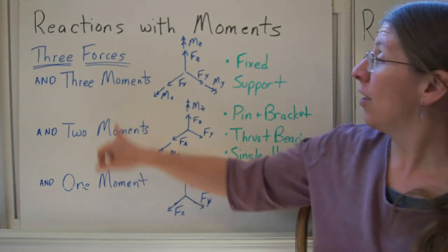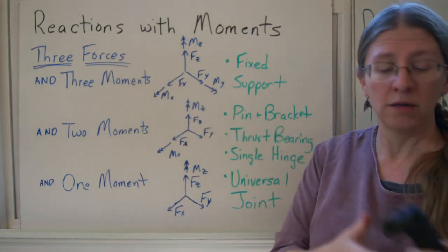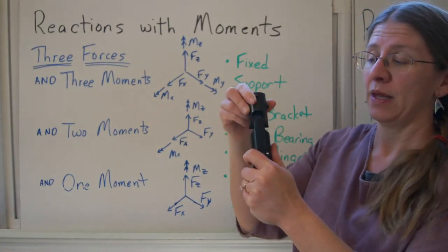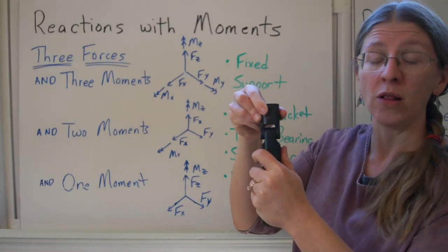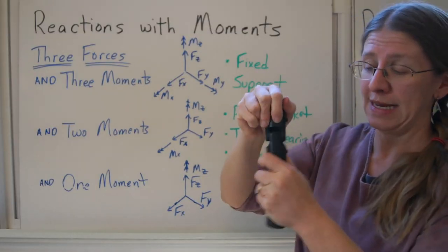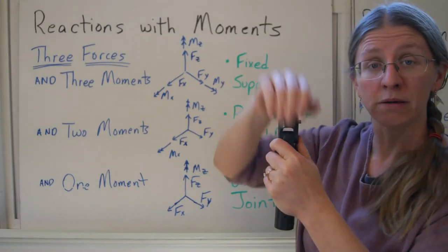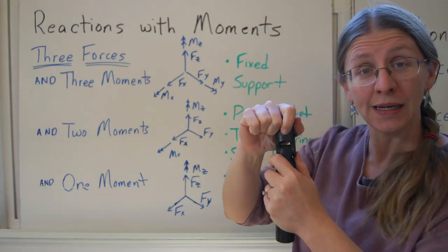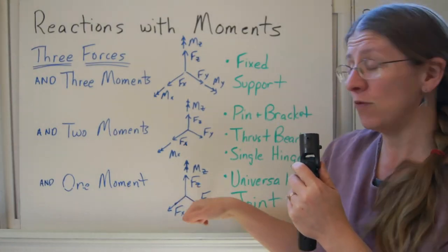I can get three forces in one moment from a universal joint. A universal joint looks like this. I can't translate the top at all with respect to the bottom. So if my support is down here and my object is up here, I am constrained away from moving in any direction, translating, that gives me three forces.